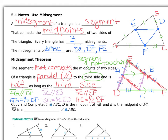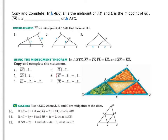Copy and complete: in triangle ABC, D is the midpoint of AB and E is the midpoint of AC. Then segment DE is indeed a mid-segment of this triangle, since a segment that connects midpoints is a mid-segment. Now that we've defined the mid-segment and learned about its properties, let's find the lengths. DE is the mid-segment of triangle ABC — find the value of X.